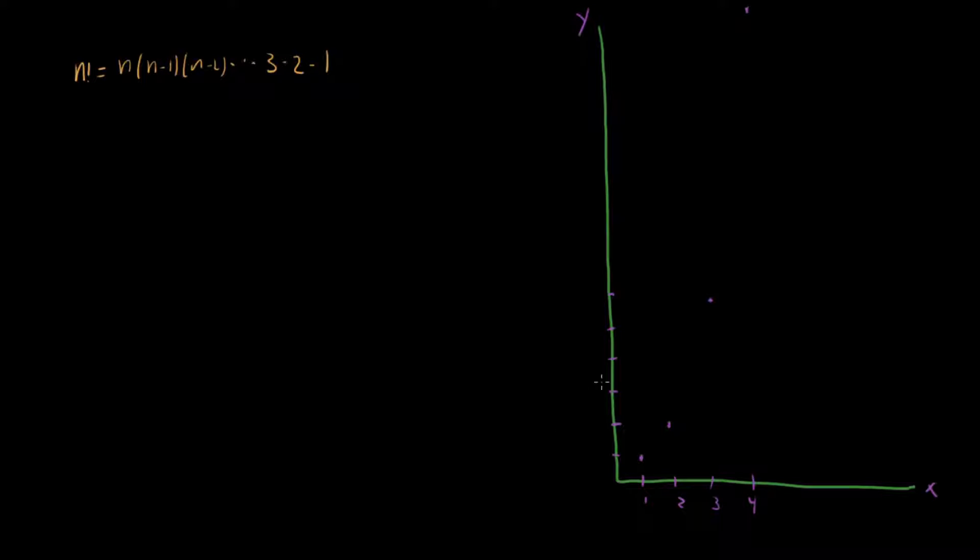But you can see that this n factorial is behaving kind of like an exponential, but actually a lot faster. As x increases here, our factorial function is just blowing up on the y-axis. So that's the factorial function that you know and love.